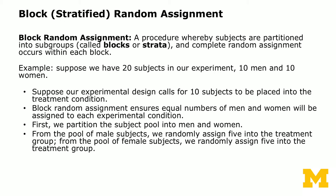With block random assignment, within the block of 10 men, you randomly assign half into treatment and half into control, giving you five men in each condition. Then within the block of women, you again randomly assign half into each condition. This guarantees that the number of men and women will be equal in each experimental condition.